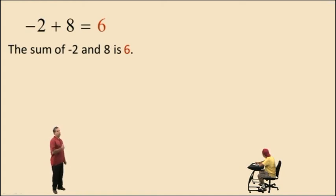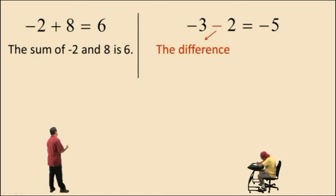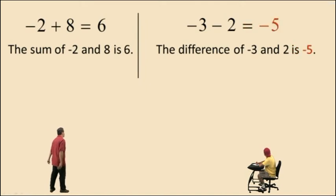Now here we have this equation. Negative 3 subtract 2 equals negative 5. We first define our operation on the left hand side, which is the difference. And here we're taking the difference of negative 3 and a positive 2. And this difference of negative 3 and positive 2 is negative 5. And there is the word statement for that equation.